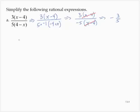Now, in practice, whenever you have something of the form a minus b over b minus a, that's the same as negative 1. So here I had 3 times x minus 4 over 5 times 4 minus x.